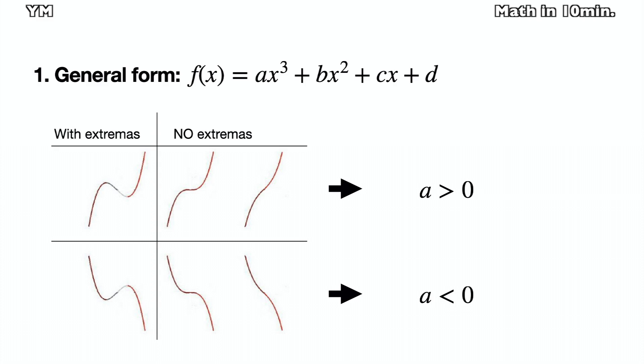The general form of the cubic function is the following. At this time, a, b, c, and d are the real numbers. There are six graphs below. All graphs are examples of the cubic functions. The upper three are the cases that a, which is the coefficient of the greatest degree, is positive. The lower three are the cases that a is negative.